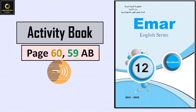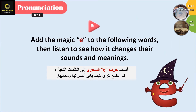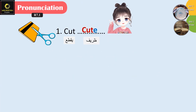Now let's move on to the activity book. Question A: Add the magic E to the following words, then listen to see how it changes their sounds and meanings. Cut — Cute.